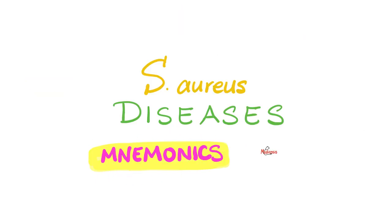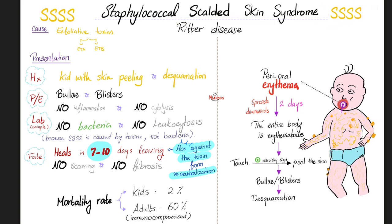Mnemonics for the diseases of Staph aureus. Staph aureus can cause Staph Scalded Skin Syndrome. Everything here is 2: SS multiplied by 2. Exfoliative toxin A and B. Kid with skin peeling and exclamation. Bullae and blisters — B and B. No inflammation, no cytolysis. If I biopsy the lesion, no bacteria and no leukocytosis. Why not? Because SSSS is caused by a toxin, not by Staph aureus itself. The disease is too benign in children, but too severe in adults because they will be immunocompromised. When it heals, it leaves no scarring, no fibrosis. It all starts with perioral erythema, and two days later you have SSSS with a positive Nikolsky sign — when you press on them lightly, they rupture and peel the skin.